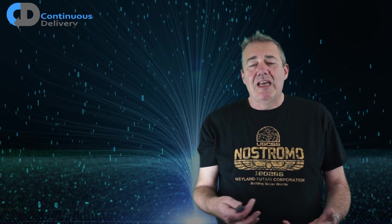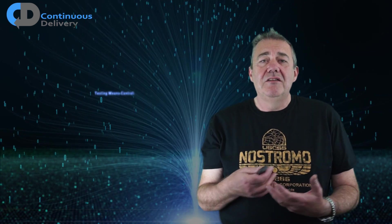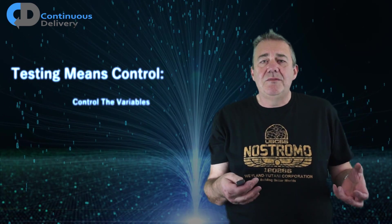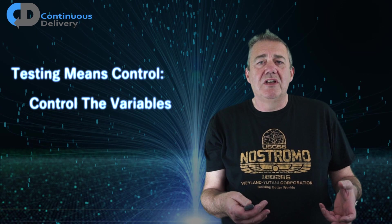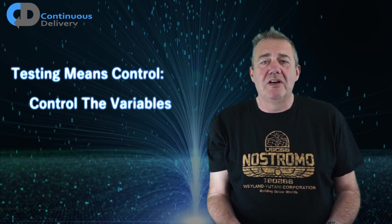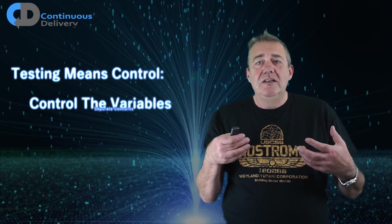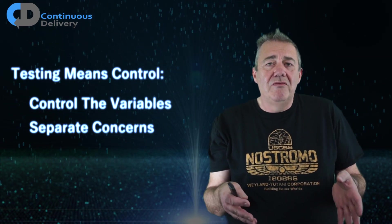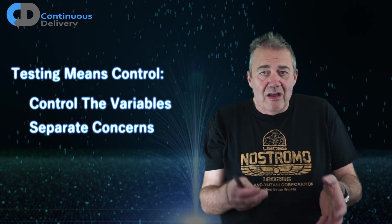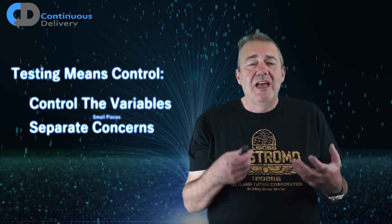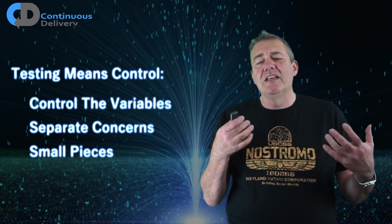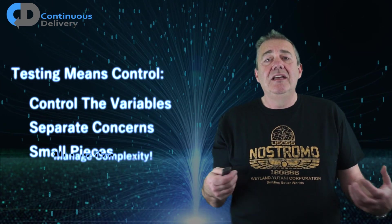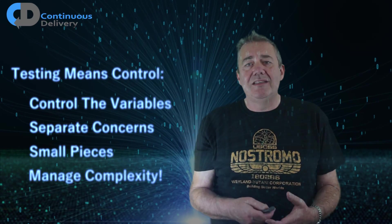In order to be able to test anything, we need to think about what testing really means and we need to start taking it seriously. We need to be able to control the variables in the system that we are trying to test. We need to think about separating concerns so we can focus our efforts on the system we are trying to test and take control of it. And we need to work in small pieces, not whole systems, in order to eliminate some of the complexity in the signals that we gather from our tests.